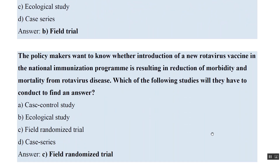The same question appears again but now with the rotavirus vaccine. The policy makers want to know whether the introduction of the new rotavirus vaccine in the national immunization program is associated with a reduction in morbidity and mortality from the disease. Which study will you conduct to find an answer? Again, a field randomized trial is the answer. So basically, to check the efficacy of a new vaccine in an immunization program, you conduct a field randomized trial.